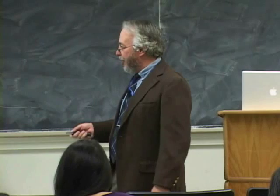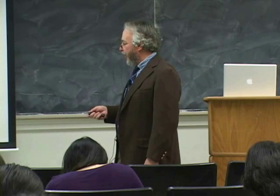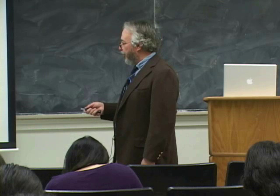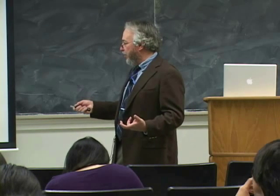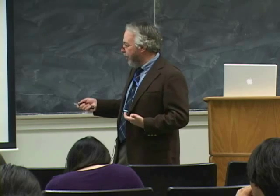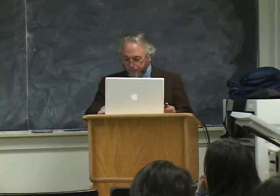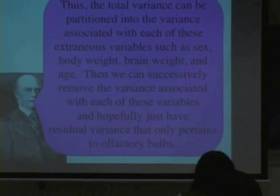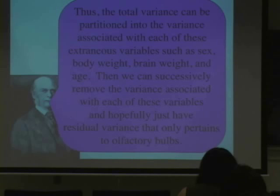The idea behind that is we could go in and take out the variance that's due to sex, take out the variance due to body weight, brain weight, and age, and distill those numbers down. So hopefully, at the end, we would have the variance that's unique to olfactory bulbs — which is what we are measuring — and of course, the ubiquitous error that you never quite get rid of. What we did is we removed the variance successively using multiple regression, and hopefully at the end we had the residual variance that only pertained to olfactory bulbs.